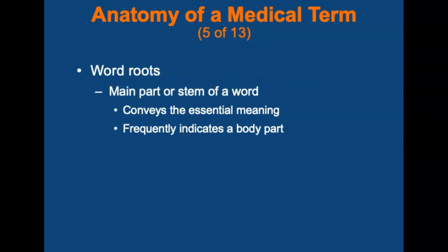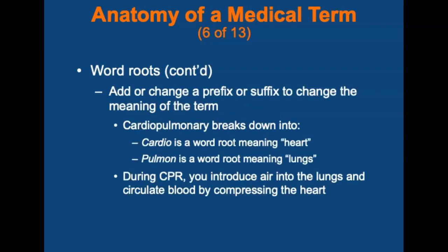Let's talk about word roots. The main part or stem of the word is called the word root or root word. It conveys the essential meaning of the word and frequently indicates a body part. Most terms have at least one word root, and some have more than one. Adding a prefix or suffix to the word root creates a term, and changing the prefix or suffix will change the meaning of the term. For example, 'cardiopulmonary' breaks down as follows: 'cardio' is the word root meaning heart, and 'pulmon' is the word root meaning lungs. Some word roots may also be used as prefixes or suffixes for other terms.